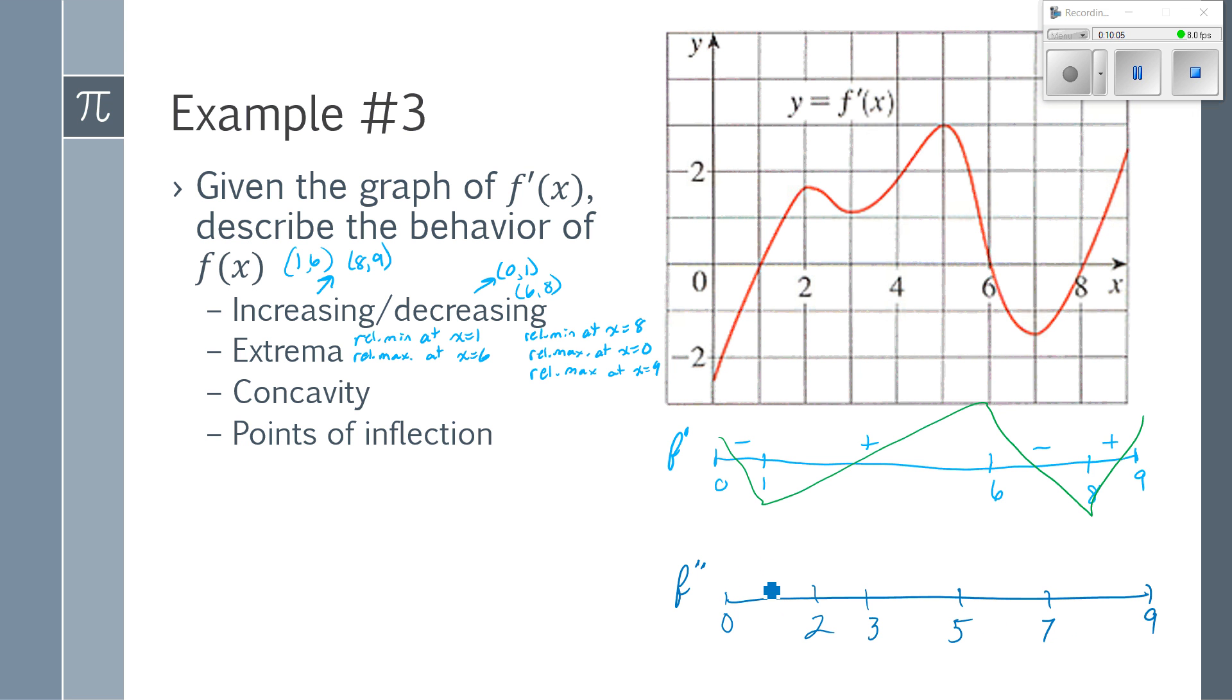So from 0 to 2, f' slope is positive. From 2 to 3, the slope is negative. From 3 to 5, positive. From 5 to 7, negative. And from 7 to 9, positive. So this means my function is concave up from 0 to 2, concave down from 2 to 3, concave up from 3 to 5, concave down from 5 to 7, and concave up from 7 to 9.